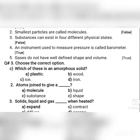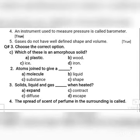Next are MCQs. MCQ number one: which of these is an amorphous solid? The options are: a) plastic, b) wood, c) iron. The correct answer is number a — plastic.